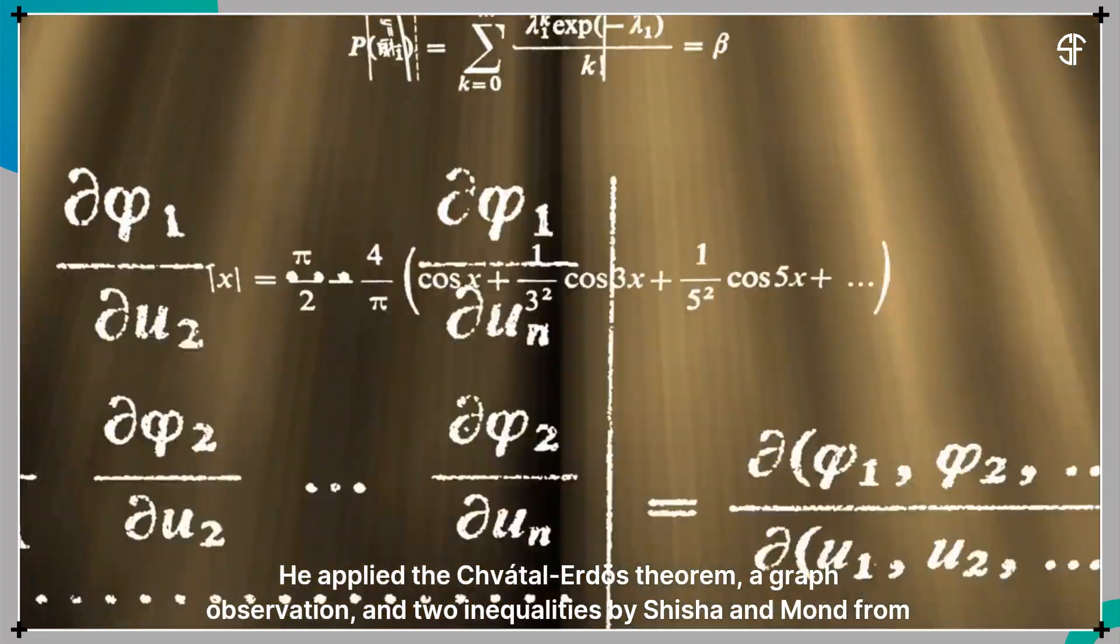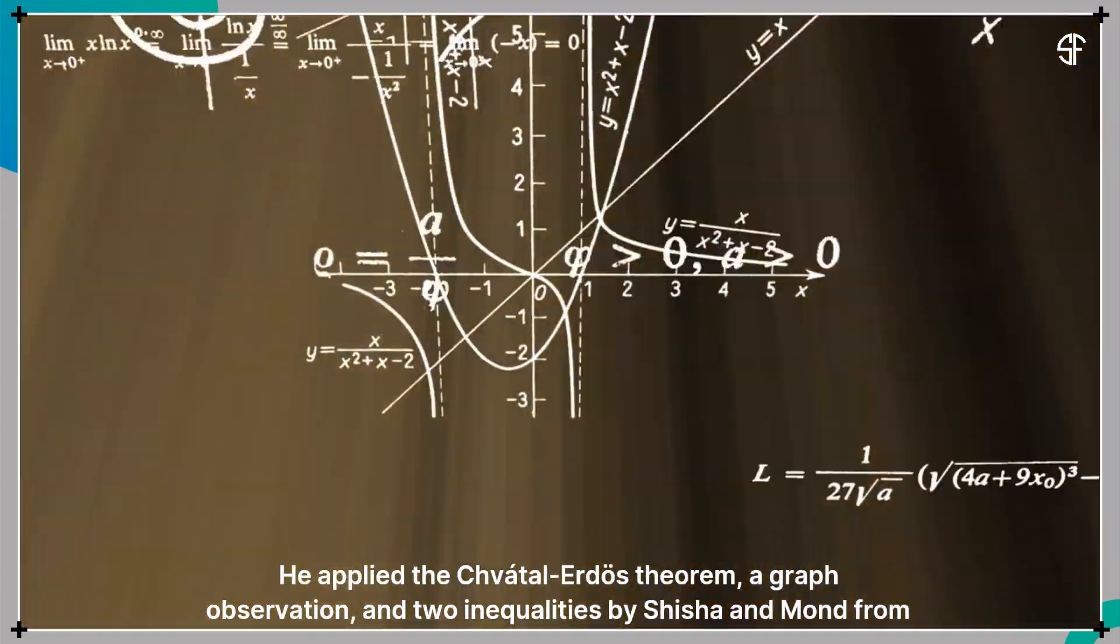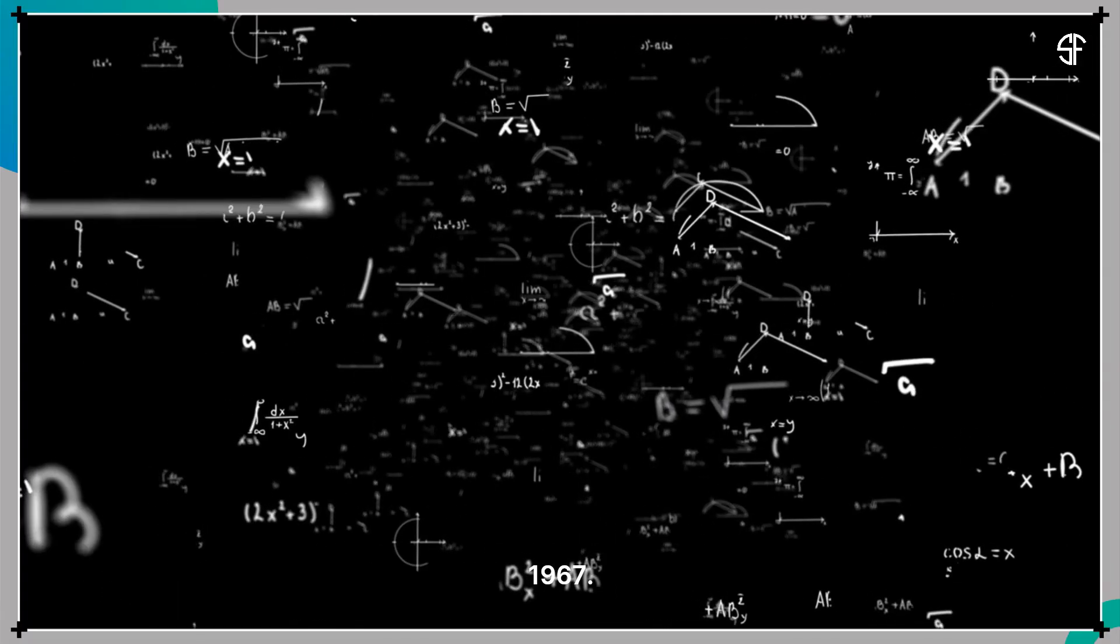He applied the Chvatal-Erdos theorem, a graph observation, and two inequalities by Shisha and Mond from 1967.